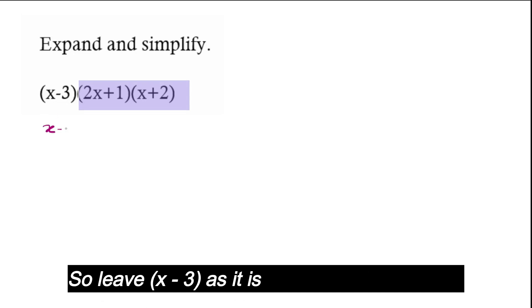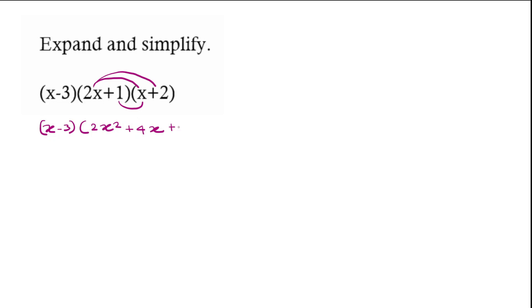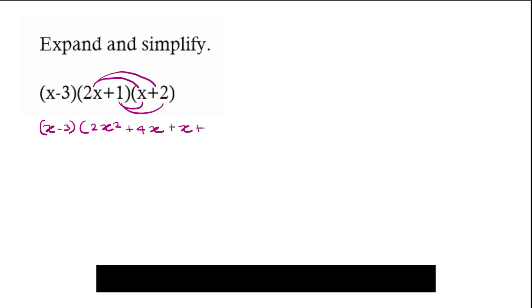So leave (x-3) as it is and multiply these two. 2x times x gives me 2x squared. 2x times 2 is 4x. 1 times x is x, and 1 times 2 is 2.